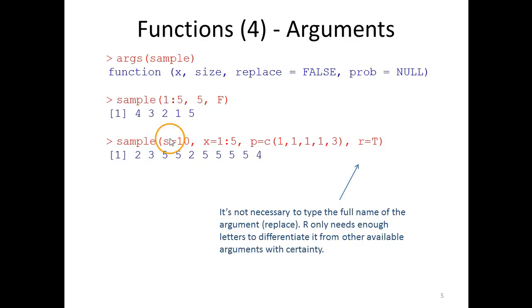But we don't have to provide the entire name. It's sufficient that we provide as many letters of the argument name as required to differentiate it from all the other arguments associated with the function. In this case, for example, s would be sufficient to tell R that it's the size because no other argument starts with s in this case, so it's interpreted as size.